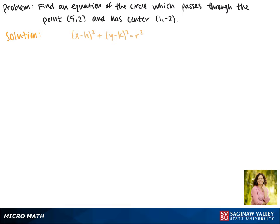So we already know the center of our circle, which is (1,-2), so we can plug that into our equation. This gives us (x - 1)² + (y + 2)².